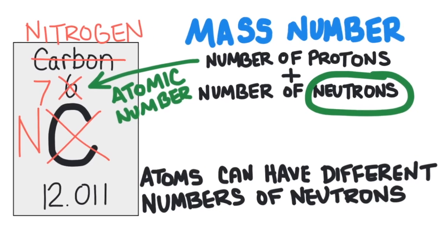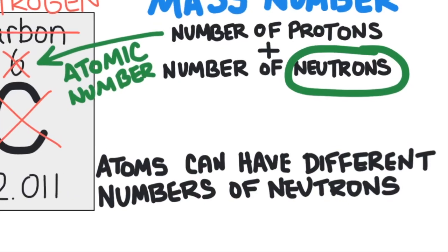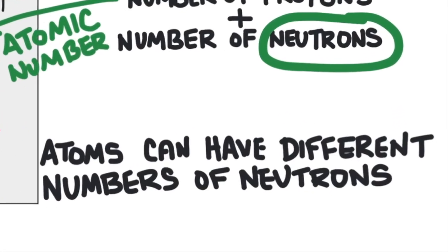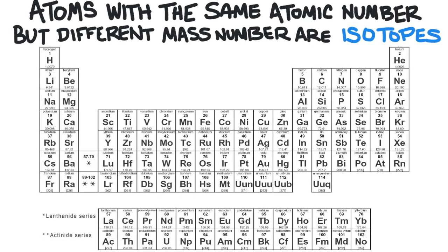As we've already described, elements can have atoms with different number of neutrons, but they will always have the same number of protons. Atoms with the same atomic number but a different mass number are called isotopes.